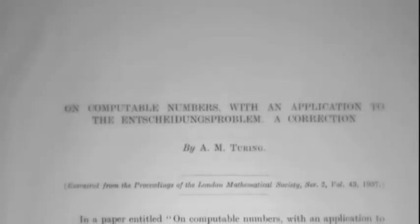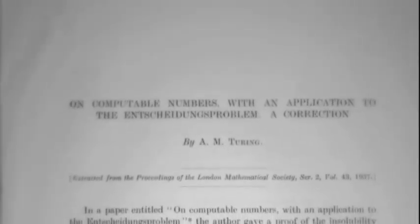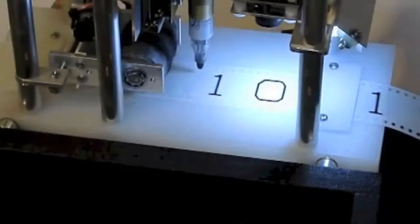Turing used a definitive example of the undecidable problem and his Turing machine to disprove Hilbert's Entscheidungsproblem, at the same time envisioning the first ever computing machine.